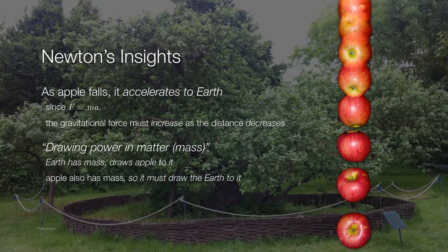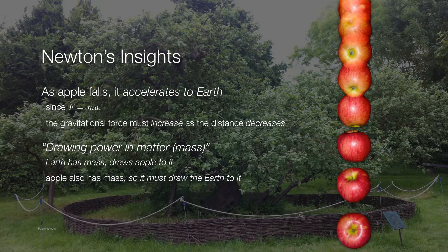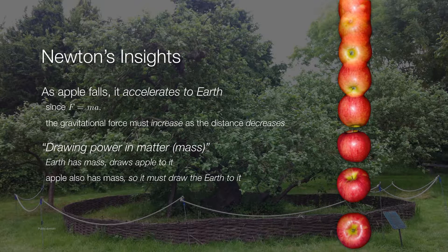So he wrote about a drawing power in mass. That is to say, earth has a mass, so it has the ability to draw the apple to it. But this also meant that the apple has a mass and therefore draws the earth to it as well.